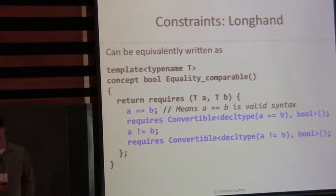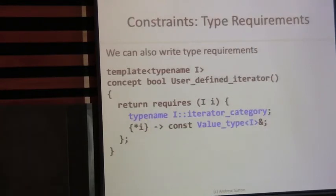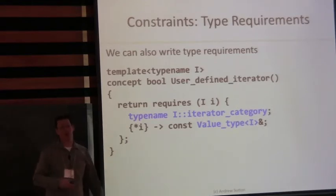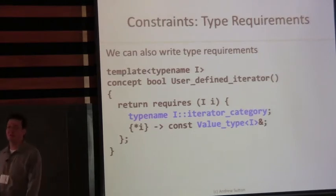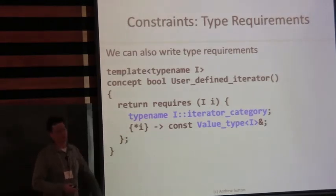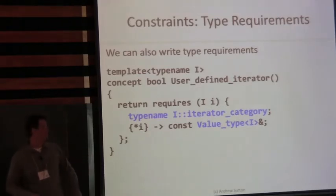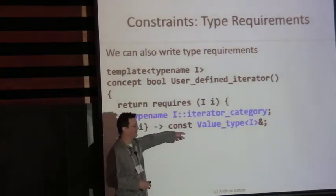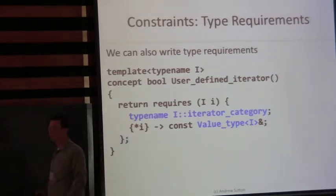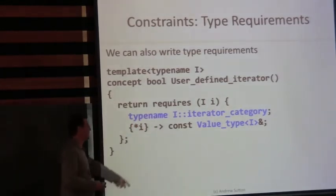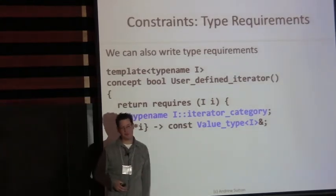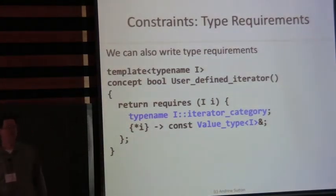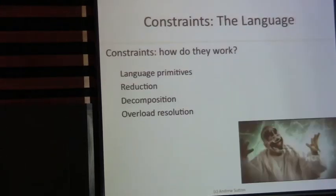Type constraints work the same way — we can just write a type name followed by a semicolon. This is an explicit requirement for the validity of some type under instantiation. If you try to check this and the type doesn't instantiate, it returns false. We can also get implicit type requirements — any type named at the back of a convertibility or result-type check becomes an implied requirement. So if the compiler cannot form this type at the point of checking, this will also return false.